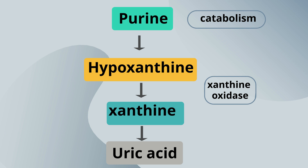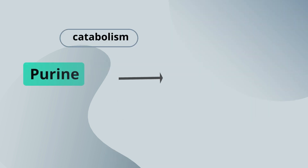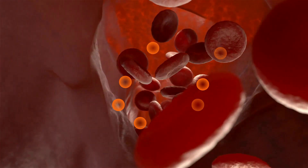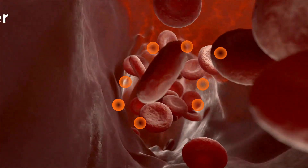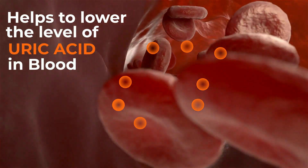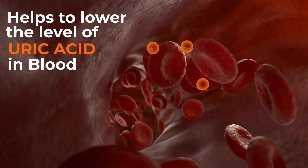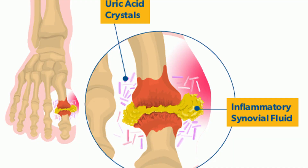Allopurinol works by inhibiting the enzyme xanthine oxidase, which is involved in the conversion of purines to uric acid. By reducing the production of uric acid, it helps to lower the levels of uric acid in the blood, preventing the formation of uric acid crystals.